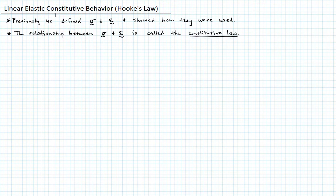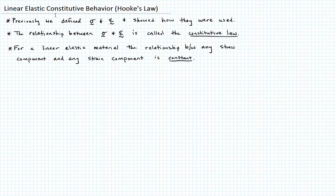For a linear elastic material, which is going to be the focus of this lecture, the relationship between any stress component and any strain component is going to be constant. So we can write sigma_ij equals C_ijkl epsilon_kl.